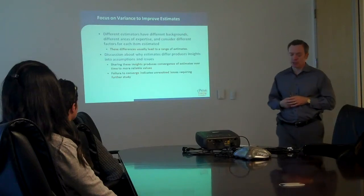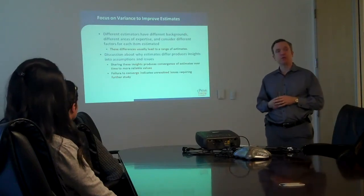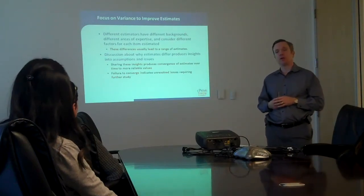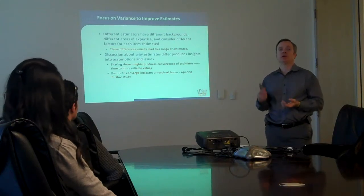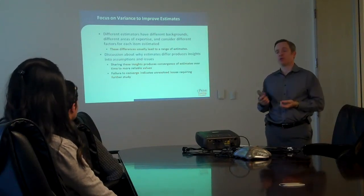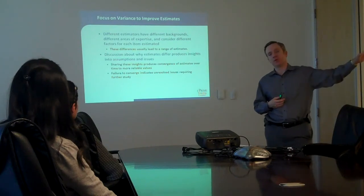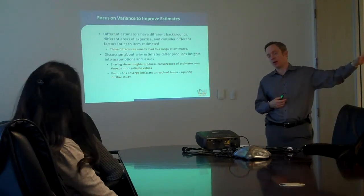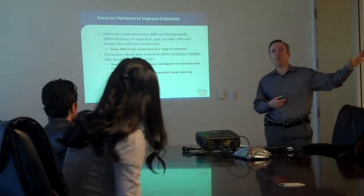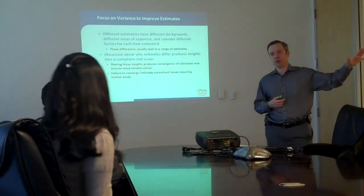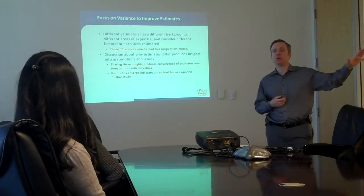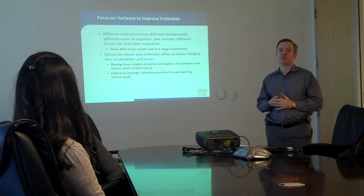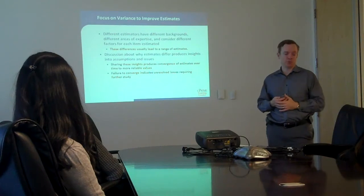It occasionally happens that we will have something that seems straightforward and clear when we start to estimate it, but we can't converge. That's a clue that there's something wrong with this problem. We need to pull it out of the session, go back and think it over again — figure out why we are missing the results and what needs to be done to make it possible for us to estimate these more accurately.